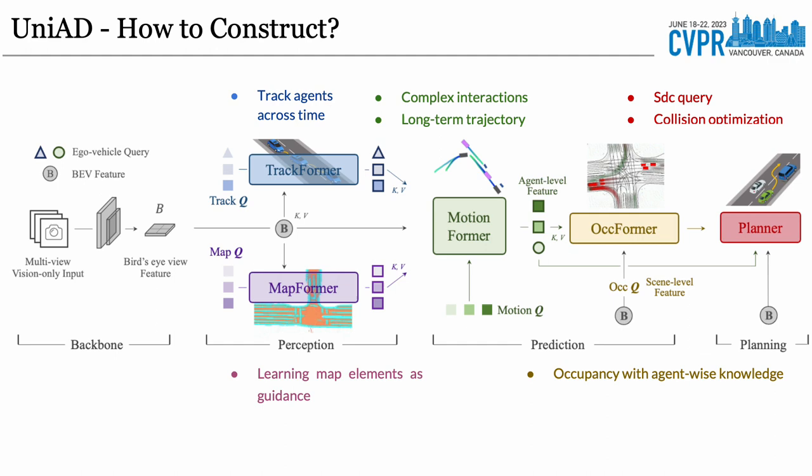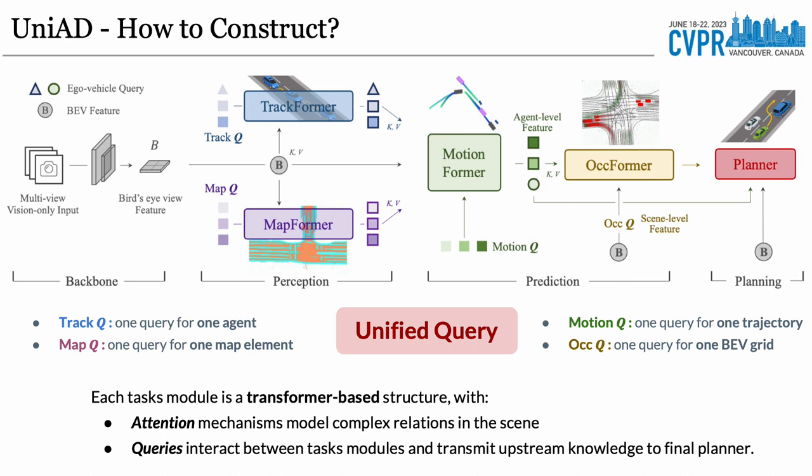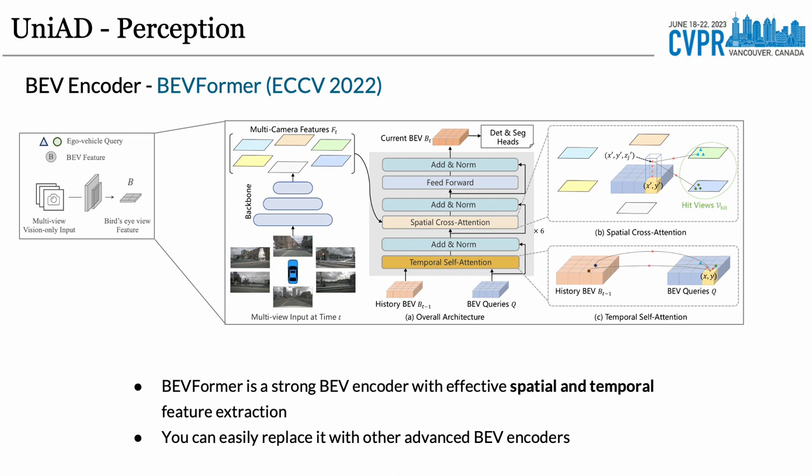Finally, the planner utilizes self-driving car queries from MotionFormer to plan, while avoiding predicted occupancy. We establish each task module with transformer-based architectures, as attention mechanisms are capable of modeling complex relations in driving scenarios. Moreover, we devise a unified query design to connect the whole pipeline, coordinate all tasks, and transmit upstream knowledge to the final planner.